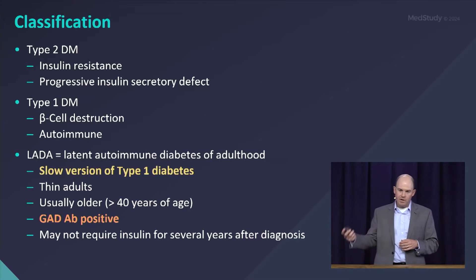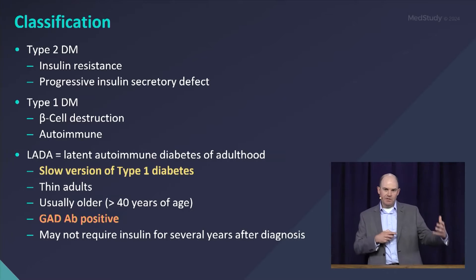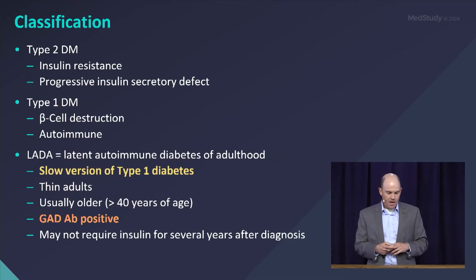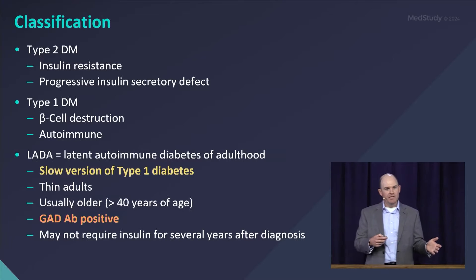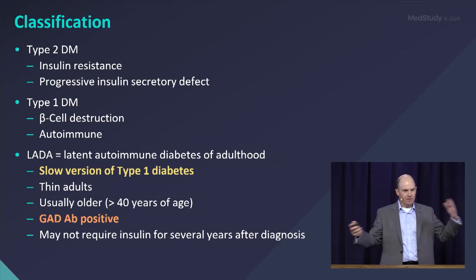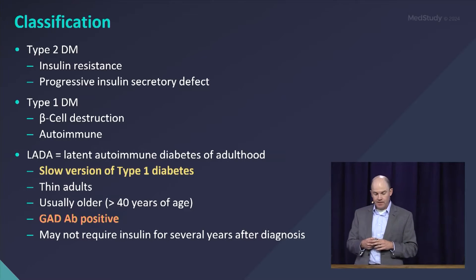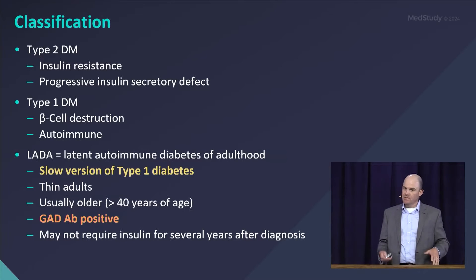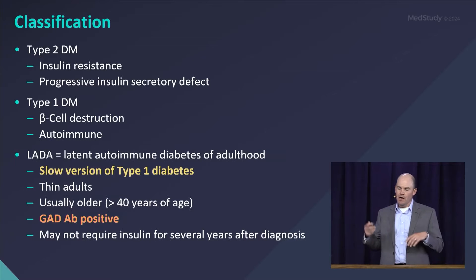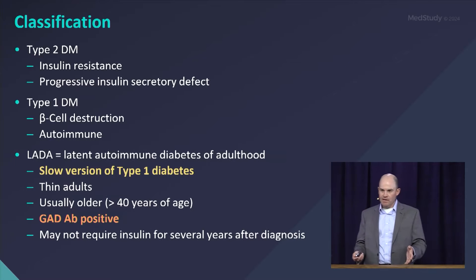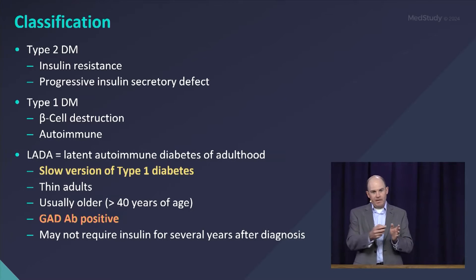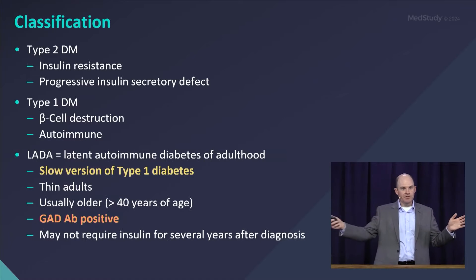Type 1 diabetes is an absolute insulin deficiency, usually autoimmune. LADA is a form of type 1 diabetes, so think about those in the same category. LADA stands for latent autoimmune diabetes of adulthood. It's the same physiology — autoimmune, with the same antibodies that are positive as in type 1. The big difference is the degree of progression.